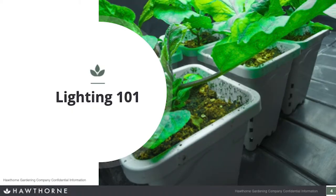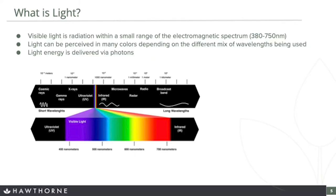Let's get things started with a quick Lighting 101 — this portion should only take about 10 minutes. So what is light? We deal with it every day, but if I asked you what it is, you might not really be able to define it. Well, visible light is radiation within a range of the electromagnetic spectrum between 380 and 750 nanometers. Each one of those wavelengths has a perceived color, and we can mix these wavelengths together to create different colors. The light itself travels in what you can think of as packets of photons — little balls of energy being thrown out all around us.